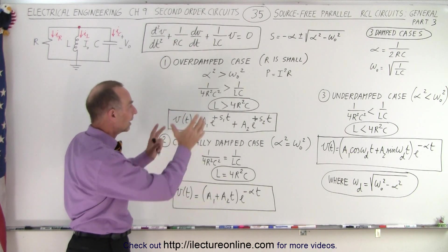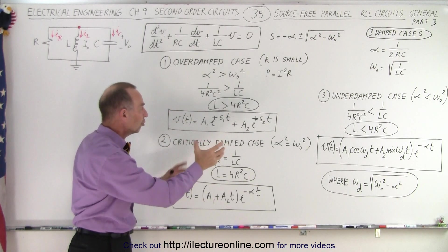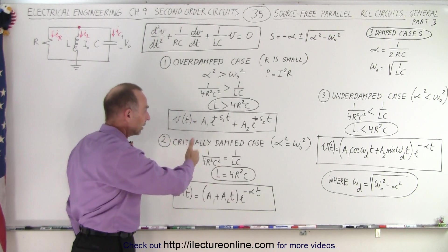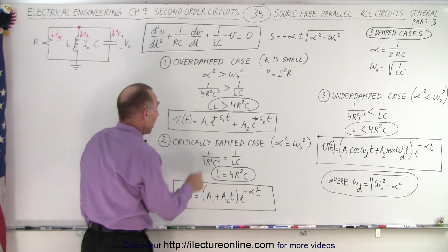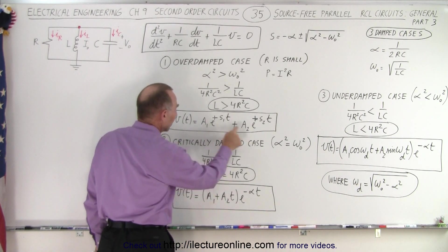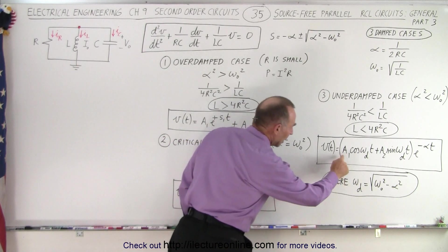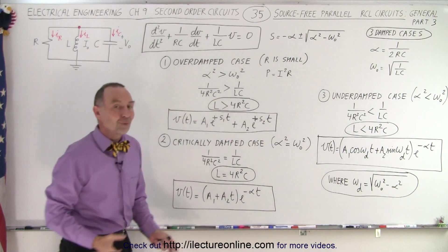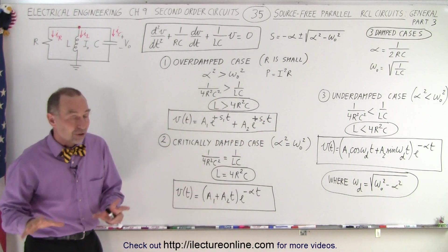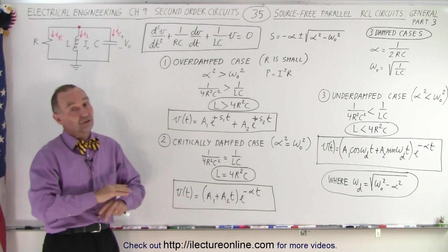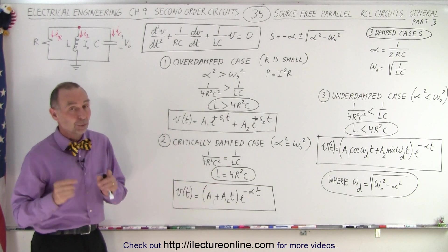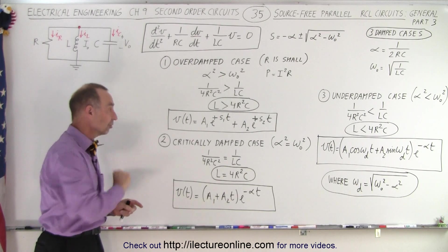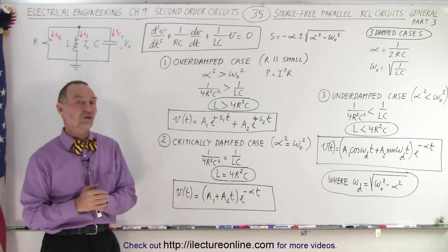So this is how we calculate the three solutions in the case of overdamped, critically damped, and underdamped. Now, the next step, of course, would be to figure out how to calculate the constants A1 and A2, A1 and A2, A1 and A2, in these three equations, and for that, you have to have initial conditions. If you don't have any initial conditions, then you can't solve the equation any further. But with initial conditions, you can solve for those constants and get the exact equation you're looking for.